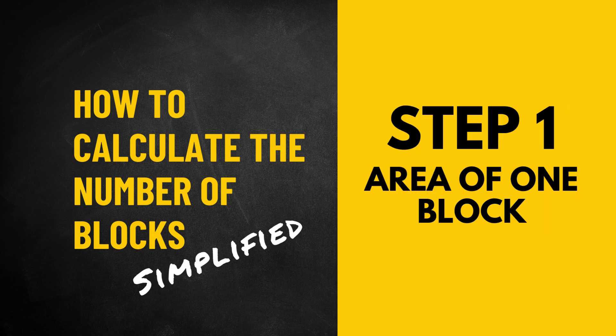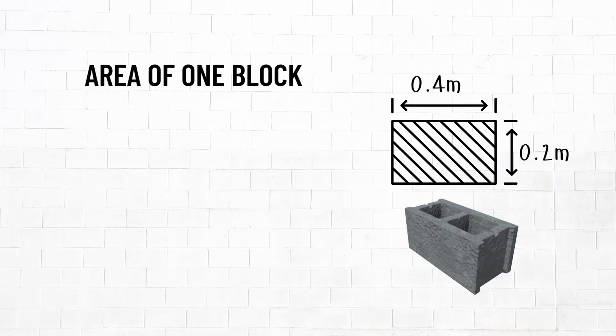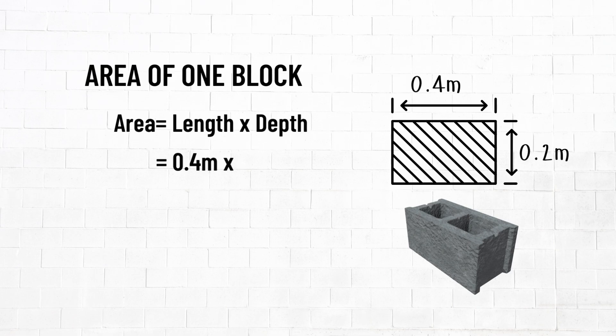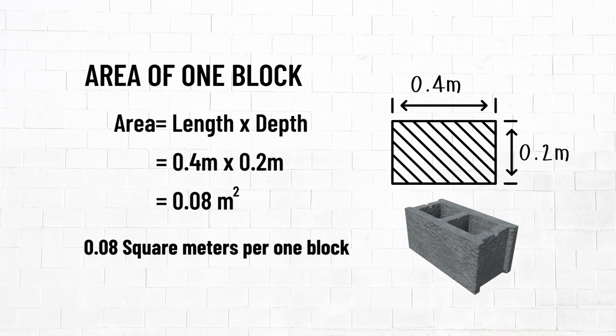Step one, area of block. We're going to find the area of a block by multiplying the length by the depth of the block. So 0.4 meters by 0.2 meters equals 0.08 square meters. This is our area of one block.